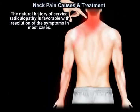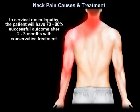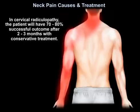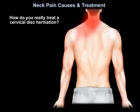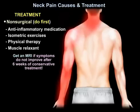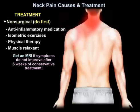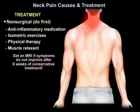The natural history of cervical radiculopathy is favorable, with resolution of symptoms in most cases. Patients will have a 70 to 80 percent successful outcome after two to three months with conservative treatment. Treatment starts non-surgically with anti-inflammatory medication, isometric exercises, physiotherapy, and muscle relaxants. Get an MRI if symptoms do not improve after six weeks of conservative treatment.